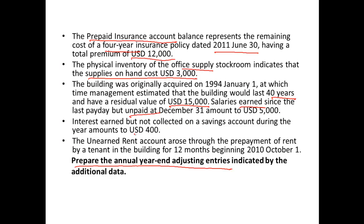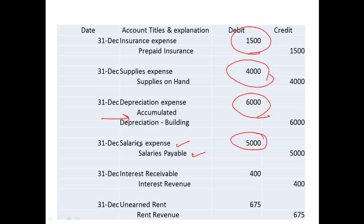Interest earned but not collected is $400. This interest has been earned in this period only, so we need to book an interest revenue of $400. We debit interest receivable and credit interest revenue with $400.